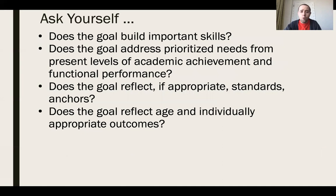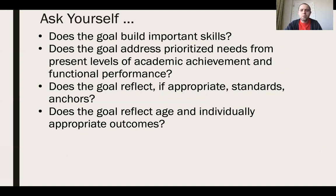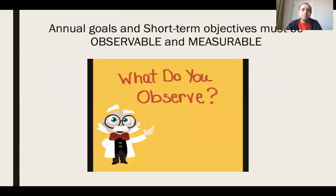Ask yourself: does the goal build important skills? Does it address prioritized needs identified in the present levels? Does it reflect applicable standards or anchors if the student is included in the general education curriculum? And does it reflect age-appropriate and individually appropriate outcomes? The biggest takeaway is to make sure those goals are observable — just like our scientist friend, we always want to be able to observe the behavior we want the student to be doing.